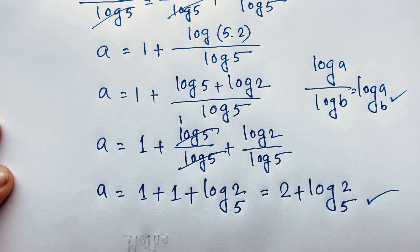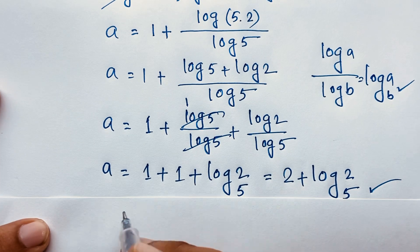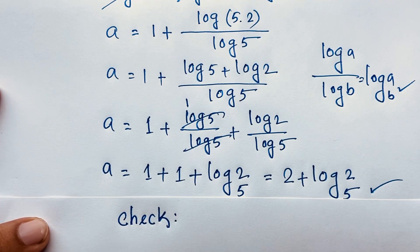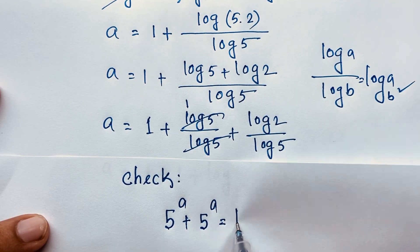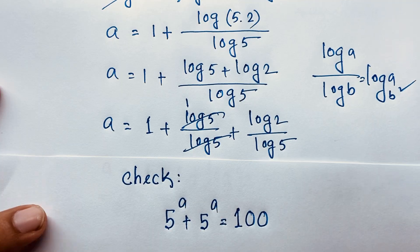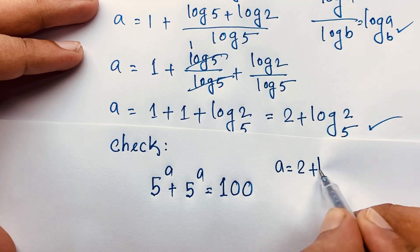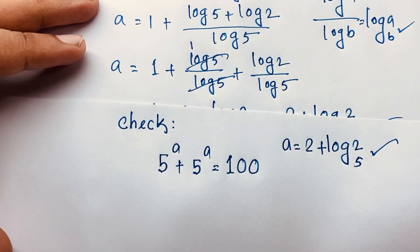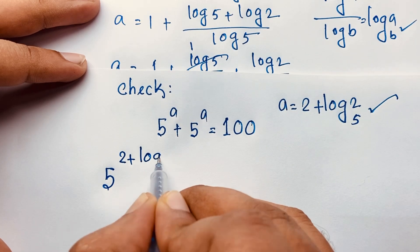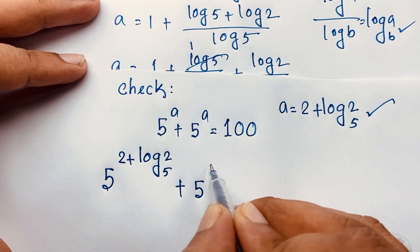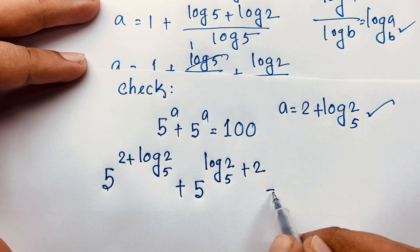Now let's verify. Check our question which is 5 to the power a plus 5 to the power a is equal to 100. Remember, we found that a equals 2 plus log 2 base 5. So I put this value here. It will be 5 to the power (2 plus log 2 base 5) plus 5 to the power (2 plus log 2 base 5). This is equal to 100. I take the 2 out, so it will be 100.